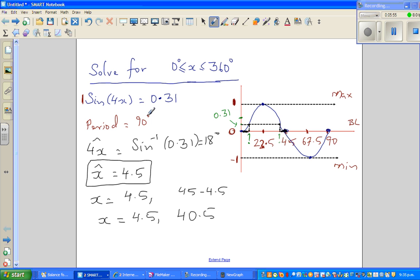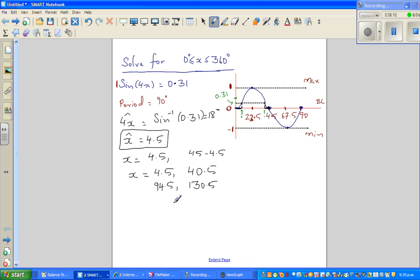So the next answer would be plus 90 would be 94.5, plus 90 is 130.5. Hopefully I'm right. So next, let me extend this. If you add 90, this is 184.5.